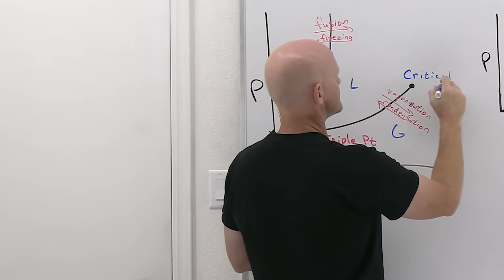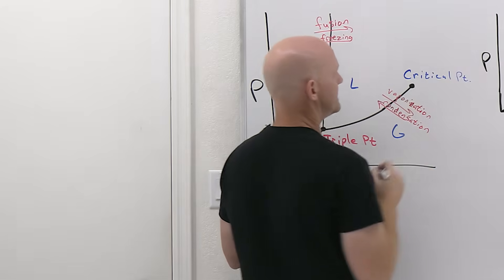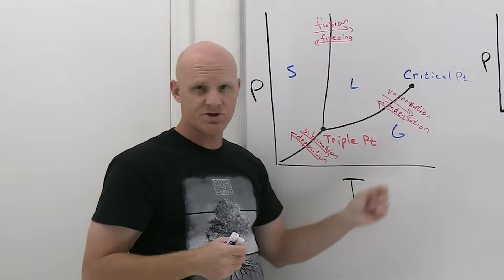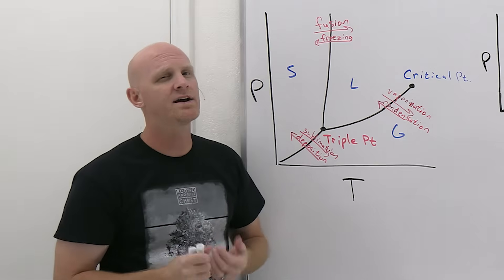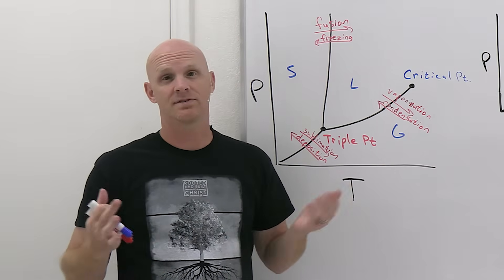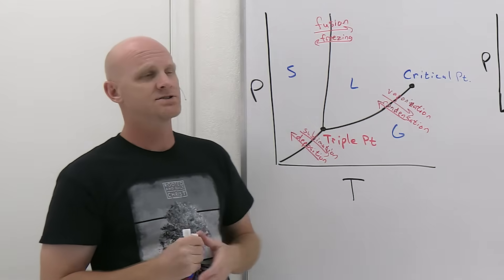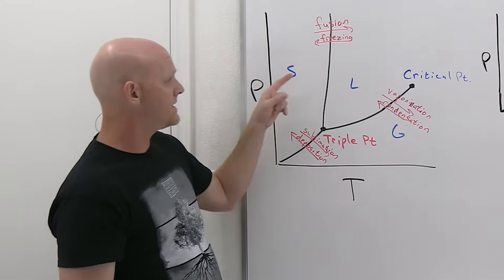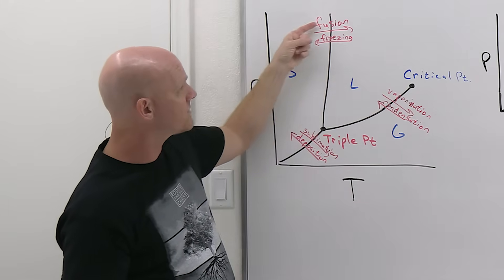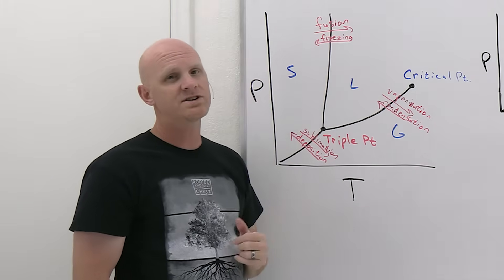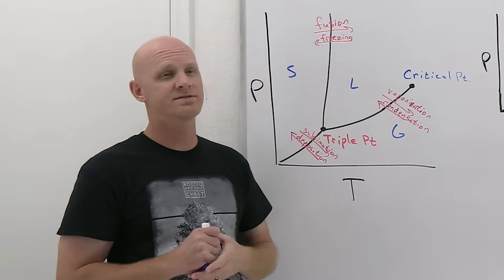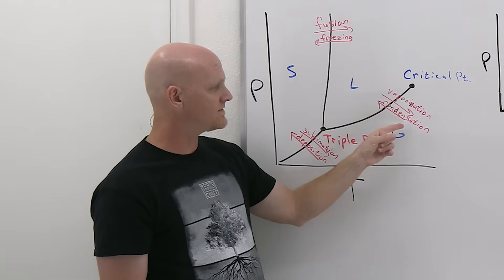We alluded to this in the last lesson. The critical point corresponds to a critical pressure and a critical temperature. It's defined as the point beyond which there are no liquid-gas phase transitions. When you go from the solid phase and cross over to the liquid phase, you're going through fusion — melting. With liquid and gas, there are some pretty noticeable phase transitions, such as condensation.